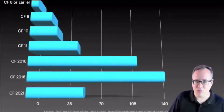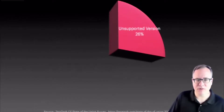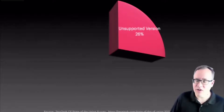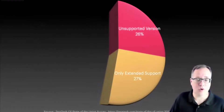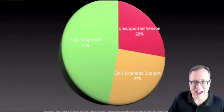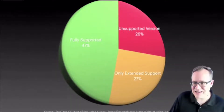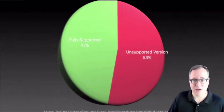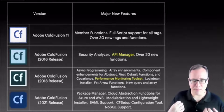Michaela Light at Tara Tech does the CF State of the Union survey every year. The 2021 survey results show that there's still representation of ColdFusion 8, 9, 10, and 11 — all completely unsupported versions that aren't getting security or bug fixes. CF 2016 and CF 2018 take up the bulk of the respondents, and CF 2021 is climbing steadily — it's only been out for six months so it's a reasonable representation so far. What really surprises me is that 26% of the respondents are using an unsupported version of ColdFusion, and another 27% only have extended support, meaning less than half are using a fully supported version.